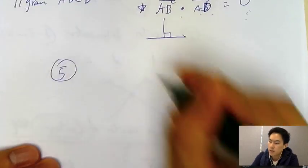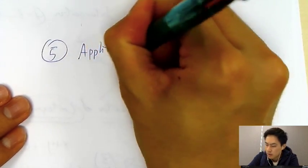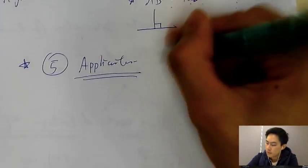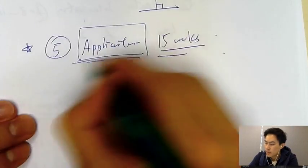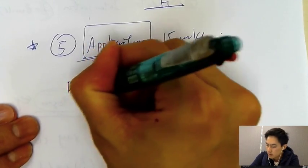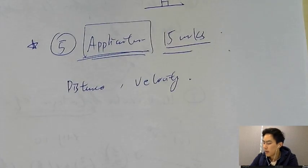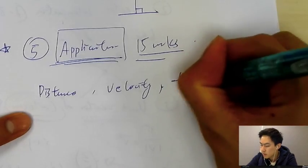The fifth question type would be the application question. This one, you must put a star—it's very, very hard. And it's always 15 mark questions, at least. So it's long questions. What is it about, like application questions? It's always about distance, velocity, and distance, speed, and time question.